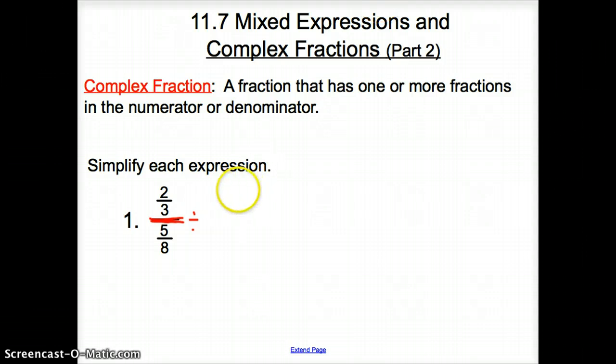So, I am going to take two-thirds, because it's on top, and now I'm going to divide it by what is on the bottom. This guy is on the bottom, so it's going to be five-eighths. Now, when we divide, what's that tell us?